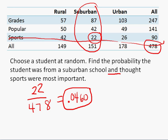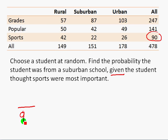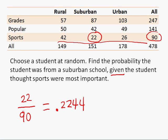Let's contrast that with a conditional probability using 'given.' The information after 'given' tells us what needs to be in our denominator. Given that sports were most important: 90 people said sports were most important, so that's our denominator. Out of those who said sports were most important, 22 were from a suburban district. So the percentage is 22 out of 90, which as a decimal is .2444.